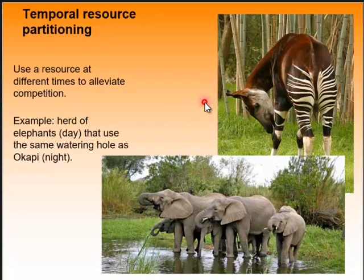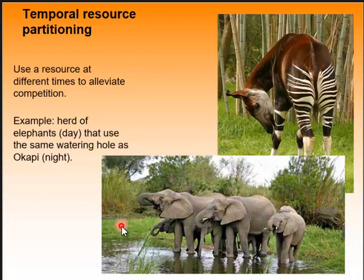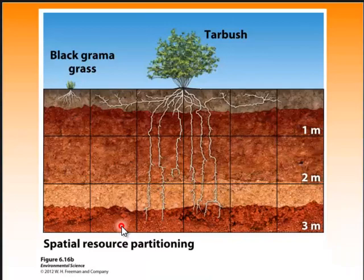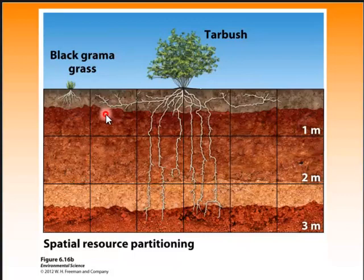An okapi goes to the watering hole at night while elephants go during the day, so there's not too much crowding — a temporal resource partition that eliminates competition. For spatial resource partitioning, if species reduce competition by using different habitats, desert plant species have evolved different root systems. Black grama has shallow roots extending over a large area to capture rainwater, while tarbush sends roots deep into the ground to tap deep sources of water.